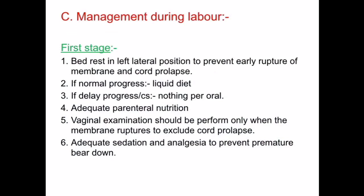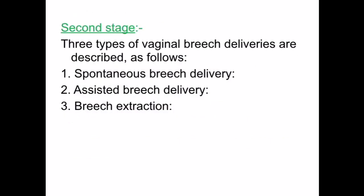Management during labor — first stage: advise bed rest in lateral position to prevent early rupture of membranes and cord prolapse. If there's no progress, put the patient on liquid diet. If there's a delay in progress, give nil by mouth. Maintain adequate parenteral nutrition and perform vaginal examination only when membranes have ruptured to exclude cord prolapse. Provide adequate sedation and analgesia to prevent premature bearing down.